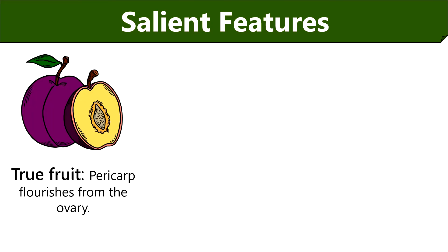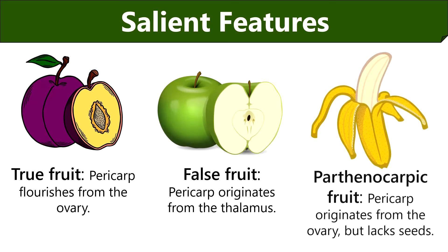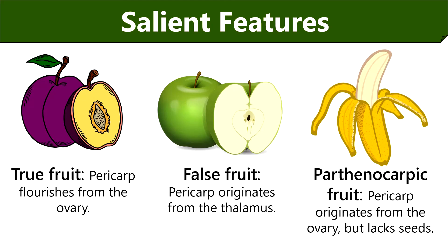We will end this video session by discussing some of the salient features of pericarp. In true fruits like plum, mango, peach, etc., the pericarp develops from the flower's ovary. Whereas in false fruits like apples, strawberries, etc., the pericarp originates from the thalamus. In parthenocarpic fruit like banana, the pericarp originates from the flower's ovary but it lacks the seed.